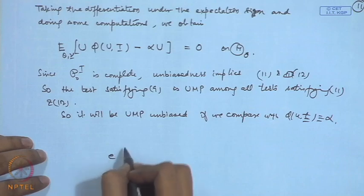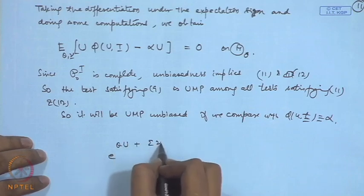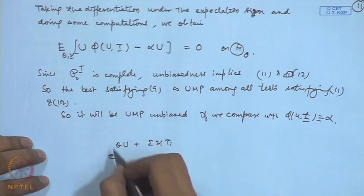The readers can actually go through the detail proof in the book of Lehmann and Romano. We will consider further applications of this, and when we are writing a distribution in the exponential family, for example, we are considering e to the power theta u plus sigma nu_i t_i.